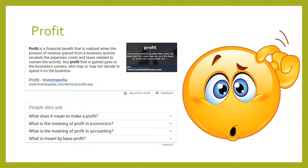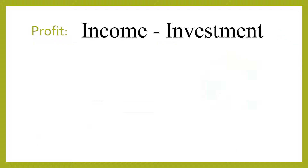Basically, all that profit is is how much money you get in excess to what you spent. So you buy sneakers for $10, you sell them for $15, your profit is $5.